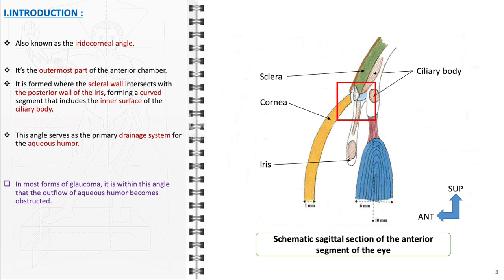This curved segment includes not only the meeting point of the sclera and iris but also the inner surface of the ciliary body. The anterior chamber angle is primarily responsible for the drainage of the aqueous humor, which is essential for maintaining intraocular pressure and providing necessary nutrients to various parts of the eye, including the lens and cornea. In most forms of glaucoma, obstruction of aqueous humor outflow occurs within this angle, leading to increased intraocular pressure, which can damage the optic nerve and impair vision.